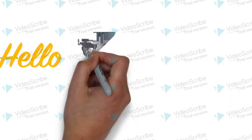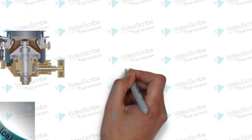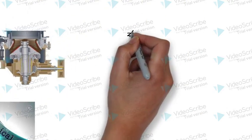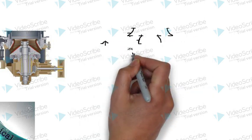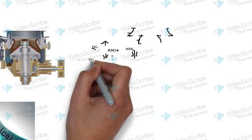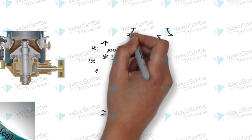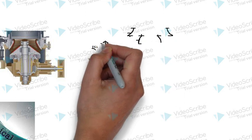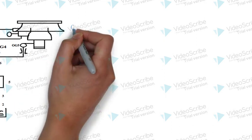Welcome to today's video, where we will explore how the lubrication system works in gyratory and hydrocone crushers. To help us understand this complex system, we'll refer to a detailed diagram, which will be further explained in the video. Additionally, we'll discuss a daily inspection checklist to prevent any breakdowns and ensure the smooth operation of these crushers. The lubrication system in these crushers is critical for maintaining proper functioning and preventing costly damages.